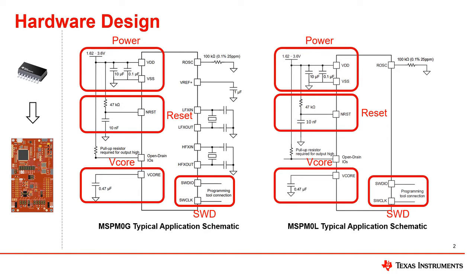Finally, the debug channel. MSP M0 MCUs have an ARM 2-wire serial wire debug emulation interface with internal pull-up and pull-down for downloading and debugging programs by simply connecting to the programming tool.